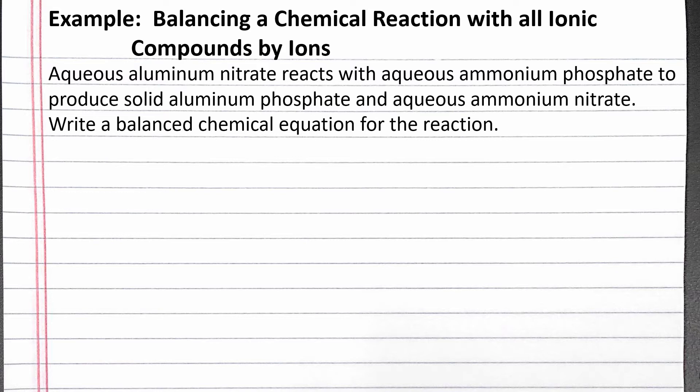Write a balanced chemical equation for the reaction. We can start by writing out the reactants and products in an unbalanced reaction. Since all of these reactants and products are ionic compounds and the ions don't change, we can just balance the ions instead of individual atoms.